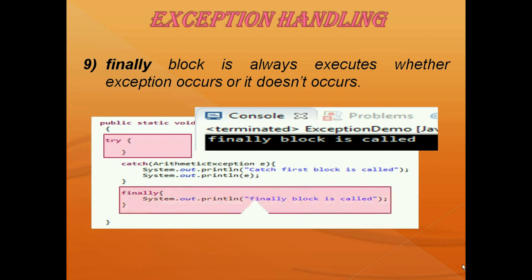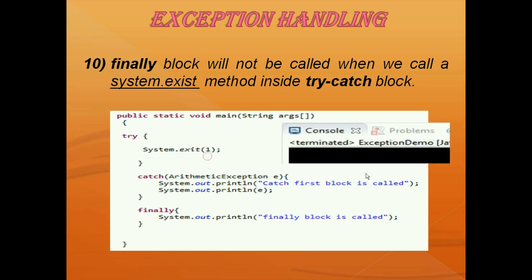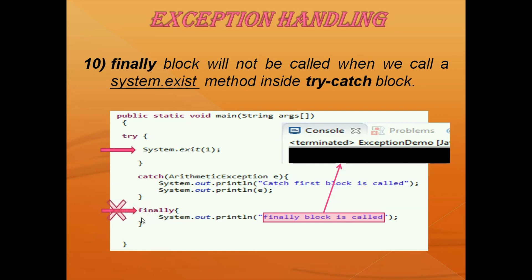If we run this program, this message 'finally block is called' is displaying. That means this finally block is always executed. There is only one situation where the finally block will not be called, and that is when we call a system.exit method inside the try-catch block. For example, if I write system.exit with some integer value and run the code, we can see finally block is not called and that message is not printed.